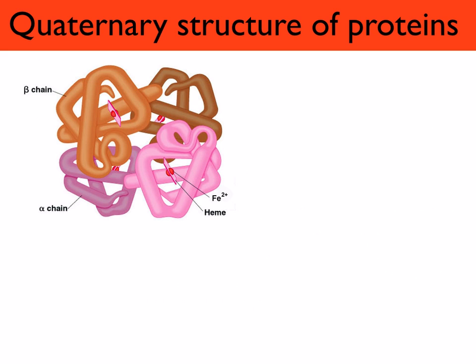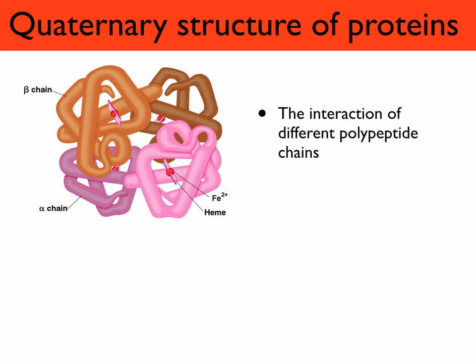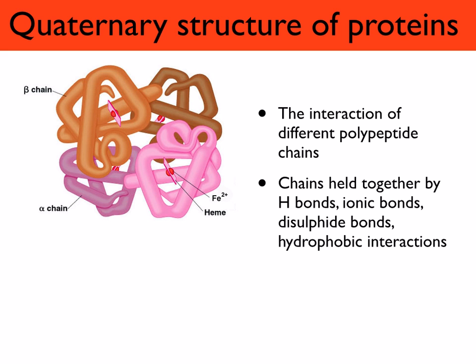Moving on to the quaternary structure of proteins — this is the interaction of different polypeptide chains. The chains are held together by hydrogen bonds, ionic bonds, disulfide bonds, and hydrophobic interactions. They can also contain a prosthetic group. For example, hemoglobin is made up of four different chains — two alpha chains and two beta chains — and sitting inside those chains is a heme group, which is called a prosthetic group.